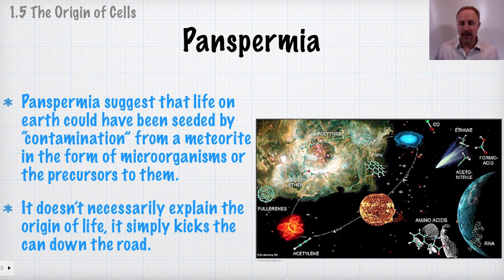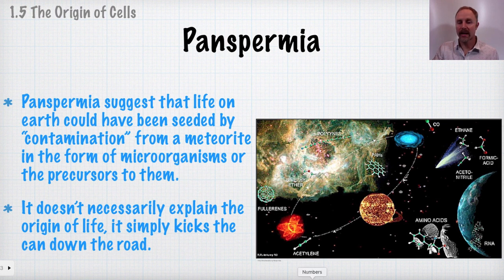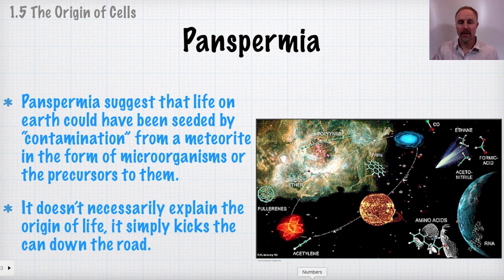The idea of panspermia — that the planet could have been seeded by compounds from outer space — may seem far-fetched, but astrobiologists examining meteorites find many biological types of compounds present in them that could have seeded the planet with the necessary materials for protobionts and organisms to come into being.